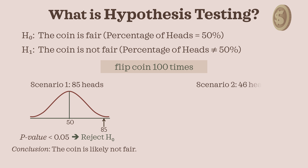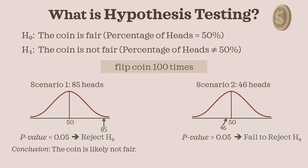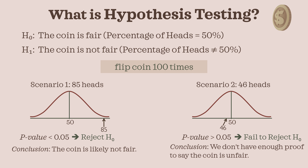On the other hand, if we obtain 46 heads in 100 tosses, this could easily happen by chance. The probability of getting 46 or fewer heads is high — more than 0.05. We therefore fail to reject the null hypothesis. We say we don't have sufficient evidence to conclude that the coin is unfair. We don't prove that it is fair — we just don't have enough evidence to conclude that the coin is unfair.